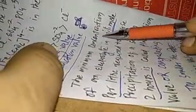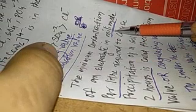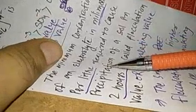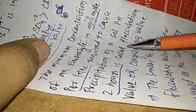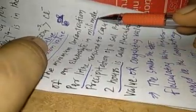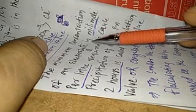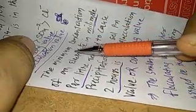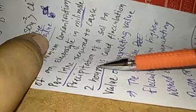We now have the term coagulating value or flocculating value. The minimum concentration of an electrolyte in millimoles per liter required to cause precipitation of a sol in 2 hours is called the flocculating value. Note: millimole means 10⁻³ moles per liter - we need to add this amount to 1 liter of the solution and precipitation must occur within 2 hours.